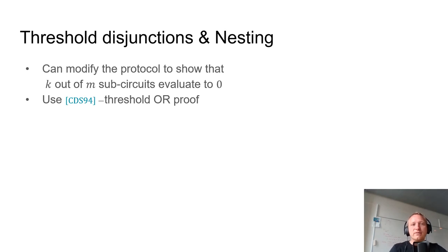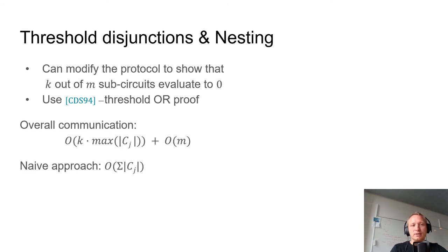One can also modify this approach to support K-out-of-M statements, where the prover shows that K of the sub-circuits evaluate to 0. One replaces the 1-out-of-M OR proof with the threshold OR proof of CDS94, improving communication to K times the longest sub-circuit versus communicating all sub-circuits naively. Disjunctions can also be nested inside each other with multiple layers simultaneously.